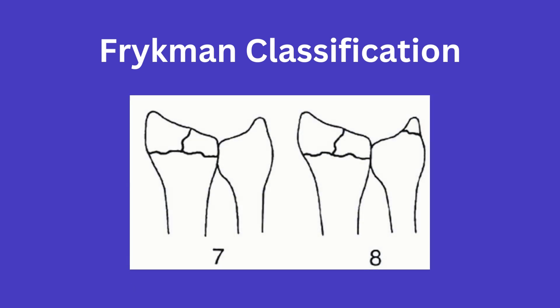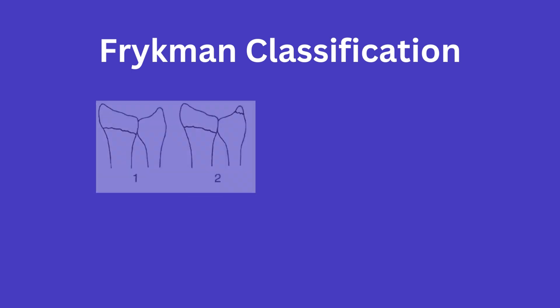Finally, type 7 is essentially a combination of type 3 and 5, as it involves fracture lines to both the radiocarpal and radioulnar joints. And type 8 is again a type 7 plus an ulnar styloid fracture.